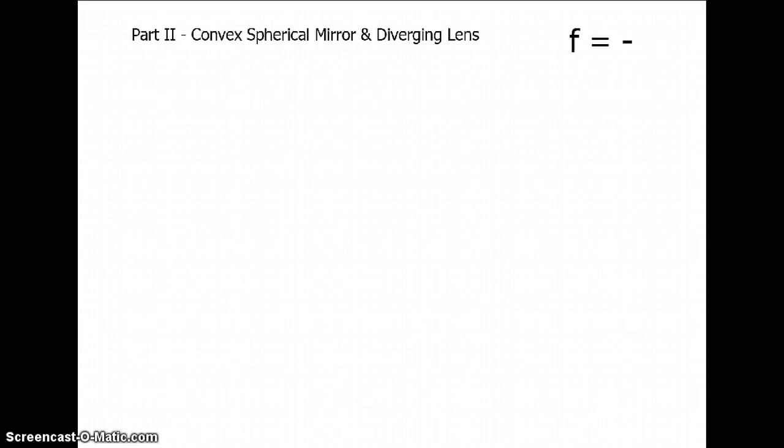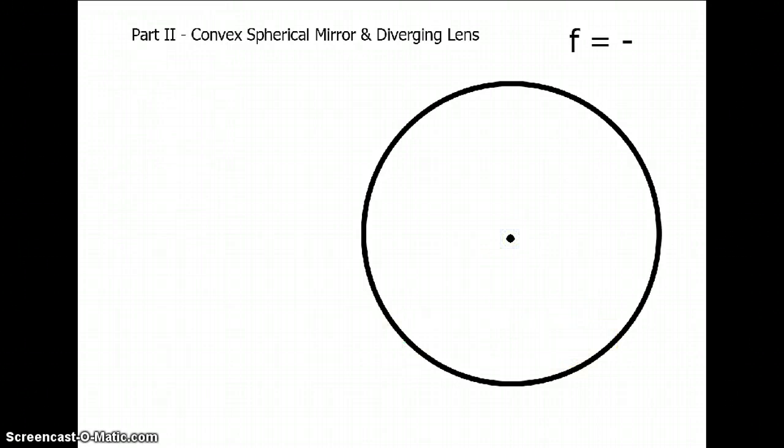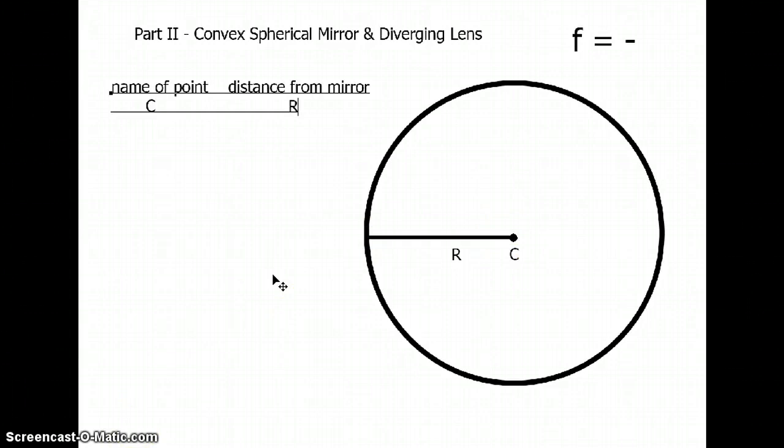First of all, let's start with the mirror. What is a spherical mirror? It's literally a piece of a sphere. So here's a sphere. It has a center there. We'll call that C, the center of curvature. We'll call the distance that center of curvature is from the mirror, the radius. So the name of the point is C and its distance from the mirror is the radius of curvature.